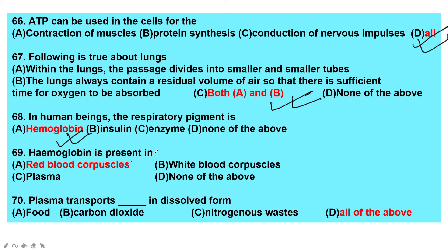In human beings the respiratory pigment is hemoglobin — that is the answer. Insulin is an enzyme, and other options are wrong. Hemoglobin is present in RBC — red blood corpuscles.